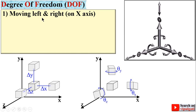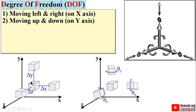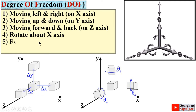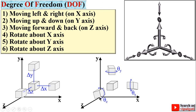First, moving left and right — here you can see — on the x-axis. Next, moving up and down on the y-axis. Next, moving forward and back on the z-axis. These three are the translational motions. Now, rotating about the x-axis, rotating about the y-axis, and rotating about the z-axis — these three are the rotational motions.